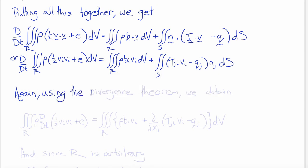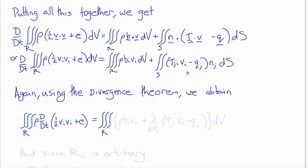Using the divergence theorem to turn this surface integral into a volume integral, we obtain that the volume integral over R of rho times the material time derivative of (one-half V_i V_i plus E) equals a volume integral over R of rho B_i V_i plus ∂/∂x_j of (T_{ji} V_i minus Q_j) integrated with respect to volume.